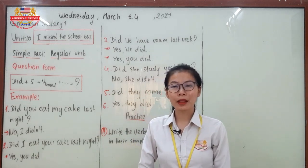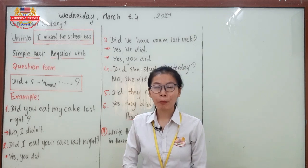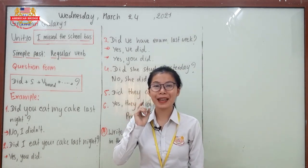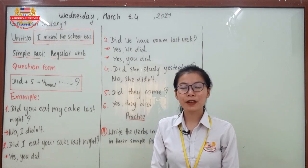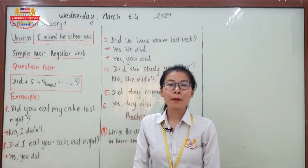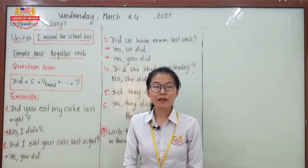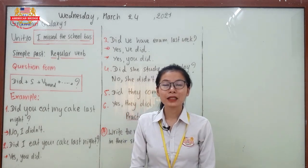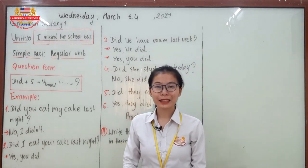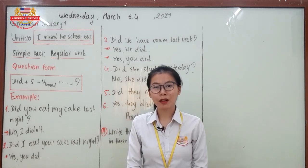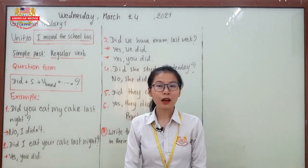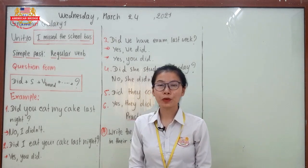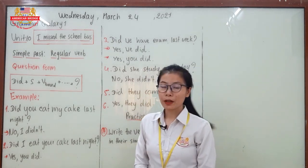In the previous lesson, you learned two forms of the simple past: the affirmative form and the negative form. Affirmative form: subject + verb 2 + object. Negative form: subject + did not + verb base + object. Verb base refers to the verb that never changes form — the original verb.